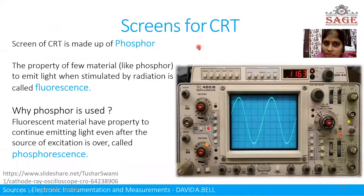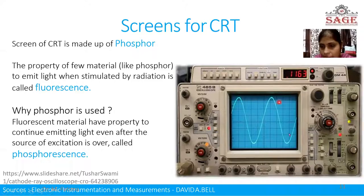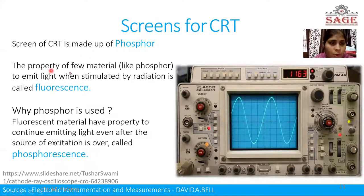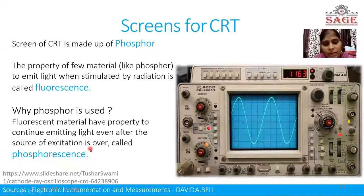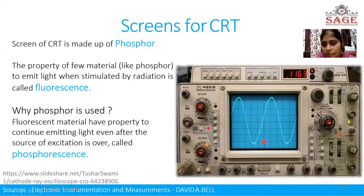The screen material for the CRT is phosphor, which is coated on the glass screen of the CRT. Phosphor has the property of fluorescence — that is, the property of a material to emit light when stimulated by radiation. The fluorescent material, phosphor, also has the property to continue emitting light even after the source of excitation is removed. This is called the phosphorescence effect or phosphorescence property. Because of this property, when the input is removed from the CRT, the CRT continues to display the waveform for some microseconds.